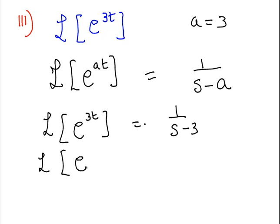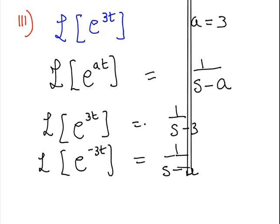I'll just give you a counter example. e to the minus 3t will give you 1 over s plus a. 1 over s plus 3 in this case actually. If we have a negative value here. So just watch out. Essentially what I'm saying is, watch out for the signs in this case.